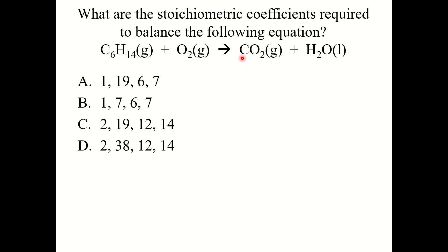What are the stoichiometric coefficients required to balance the following combustion reaction of C6H14? The correct answer is C: 2, 19, 12, 14. When you work through this, you get a coefficient of 6 on CO2 and 7 on H2O, resulting in 19 oxygen atoms on the right side. Place a coefficient of 19/2 in front of O2, then multiply everything by 2 to get rid of the fractional coefficient, giving 2, 19, 12, and 14 as the final answer.